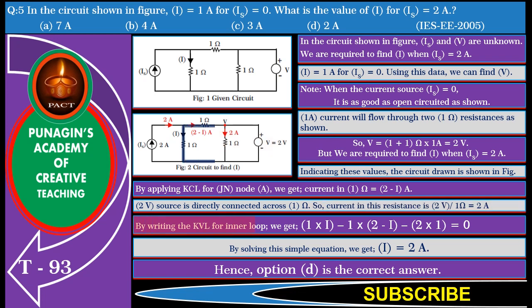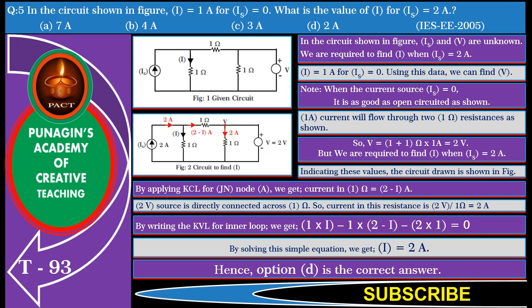By writing the KVL for the inner loop, we get 1 into I minus 1 into (2 minus I) minus 2 into 1 equals 0. By solving this simple equation, we get I equals 2 amperes. Hence, option D is the correct answer.